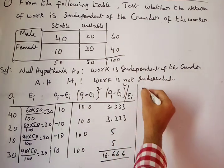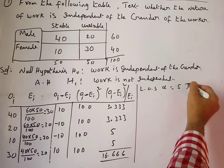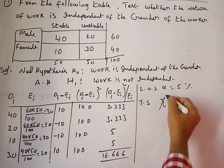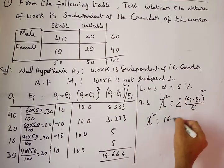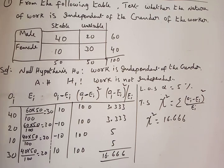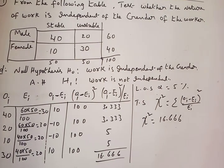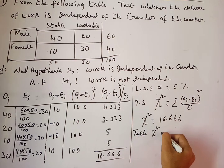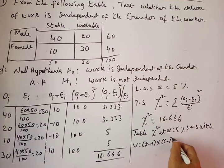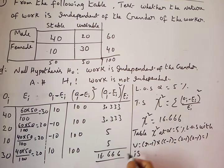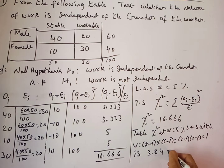Level of significance α = 5%. Calculated χ² = 16.66. Table chi-square at α = 5% with ν = (2−1)(2−1) = 1 degree of freedom is 3.84.